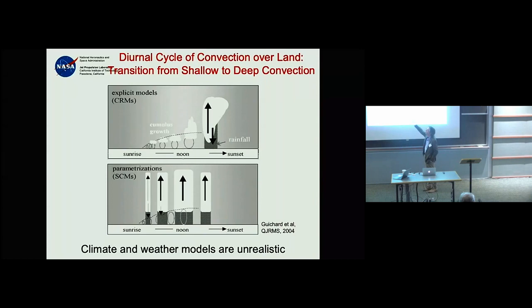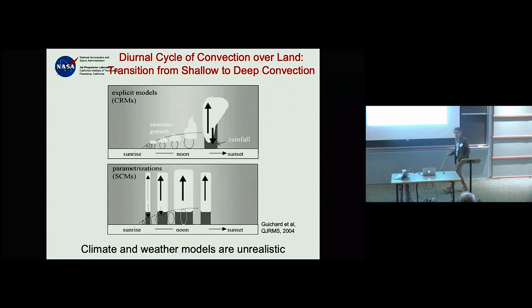Most models — I would say all models even today — do this very poorly. They basically explode into deep convection several hours earlier than they should. The smooth transition that starts from a stable boundary layer in the morning and eventually produces rain in the evening is not reproduced.